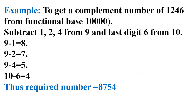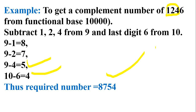Let me move to one more example. Now you have the number 1,246 with base 10,000, and you have to find its complement number. Once again: subtract 1, 2, 4 from 9 and the last digit 6 from 10. So: 9 minus 1 is 8, 9 minus 2 is 7, 9 minus 4 is 5, and 10 minus 6 is 4. So 8, 7, 5, 4 is the complement number of 1,246 for functional base 10,000.